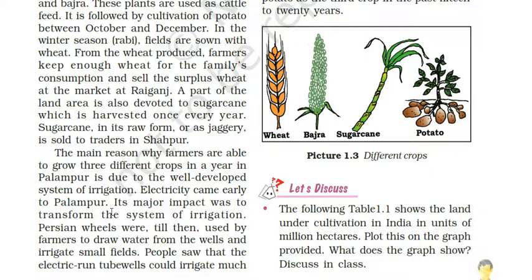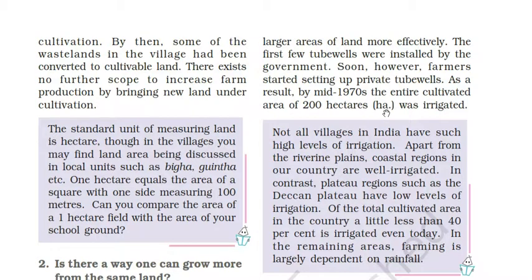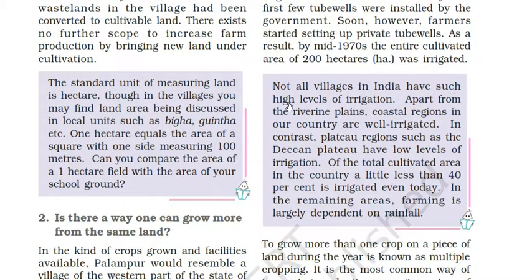Electricity came early to Palampur and its major impact was to transform the irrigation system. Earlier, farmers used Persian wheels to draw water from wells. Electric-run tube wells could irrigate a much larger area more effectively. The first tube wells were installed by the government, but soon farmers started setting up private tube wells. By mid-1970s, the entire cultivated area of 200 hectares was irrigated. Not all villages in India have such high levels of irrigation; plateau regions like the Deccan Plateau have low levels, and a little less than 40% of total cultivated area in India is irrigated even today.